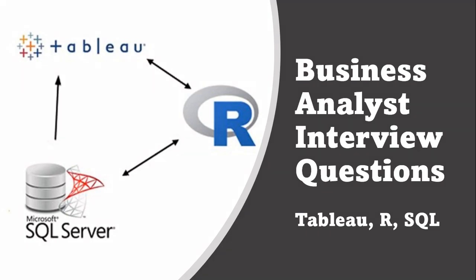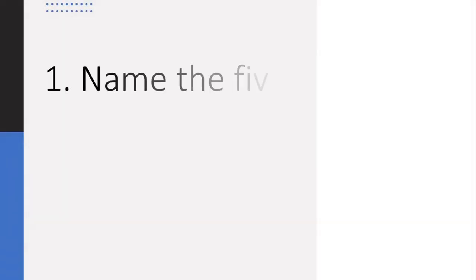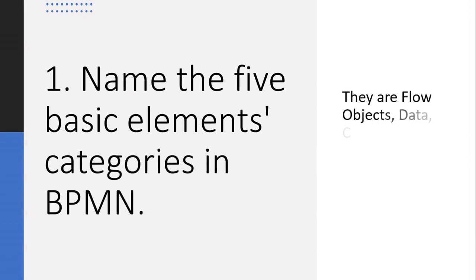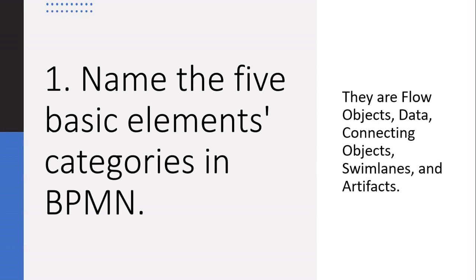General Question 1: Name the five basic element categories in BPMN. They are flow objects, data, connecting objects, swim lanes, and artifacts.